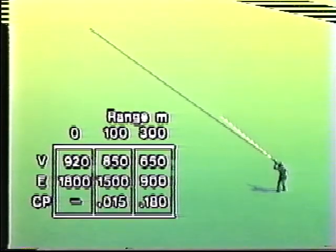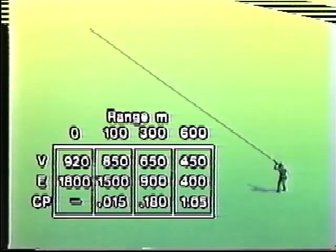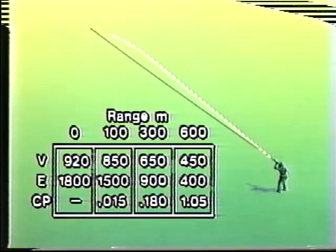At 300 meters, velocity declines by a third and energy is half its initial value. The culminating point is almost a fifth of a meter over the line of sight. At 600 meters, the velocity of the bullet declines to less than half and energy to less than a quarter. The culminating point is a little more than a meter above the line of sight.